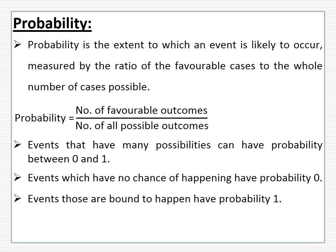Getting a number 7 when a dice is thrown — is it possible? No. Events which have no chance of happening have probability 0. Zero refers to something impossible that will never happen. And events that are bound to happen have probability 1 — something that will certainly happen. For example, if the current month is June, then the probability of the next month being July is 1, because it is certain to happen.